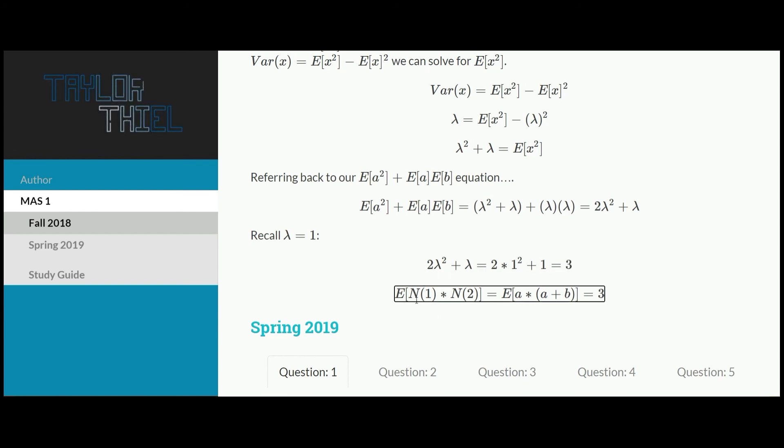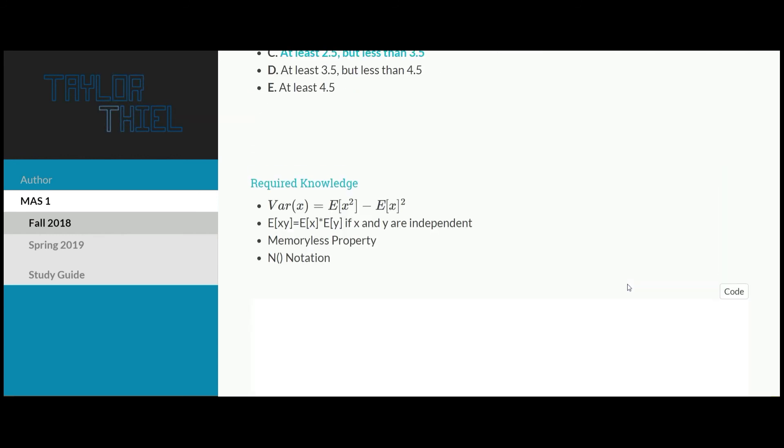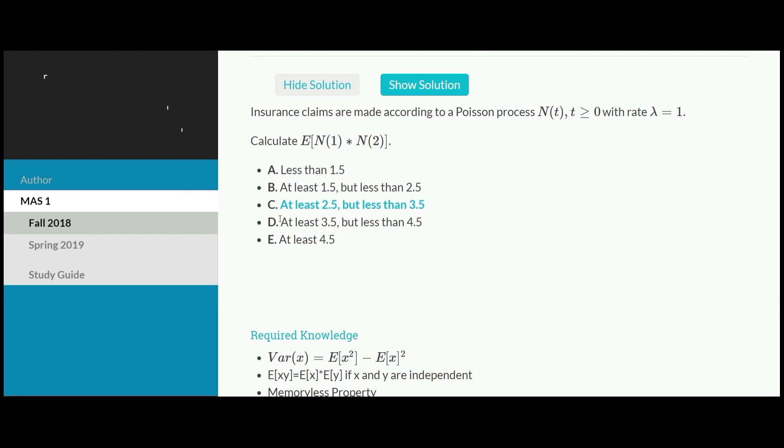I just have this all rewritten for all the different notations. How the question initially asked for it, how we chose to rewrite it, just so it made a bit more sense, thinking of that timeline of green versus blue. And then our final solution of 3. Scrolling back up to the question, we see that 3 falls in the range of C, so C is our final answer.